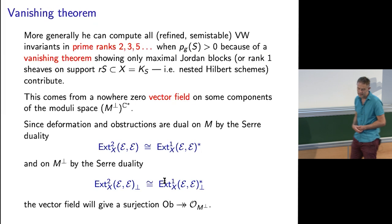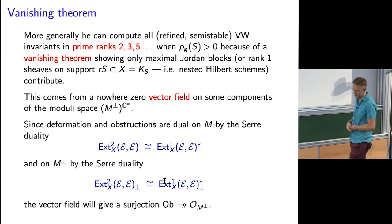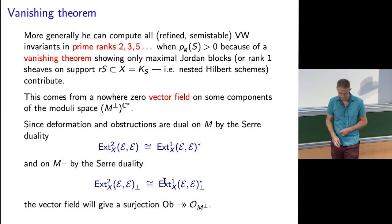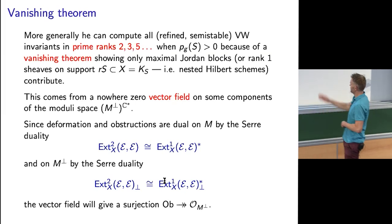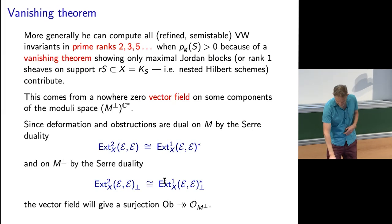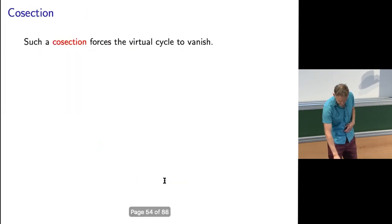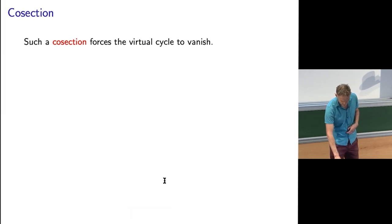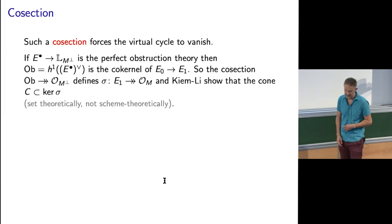A vector field gives me a map from the obstruction space to the structure sheaf. This is what's called a co-section. In many cases it's a surjection. When it is surjective, this forces the virtual cycle to vanish.